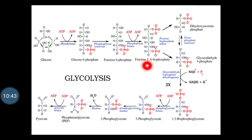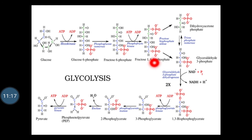The third step is the phosphorylation of fructose 6-phosphate. Fructose 6-phosphate is converted to fructose 1,6-bisphosphate. This is the second priming step of glycolysis, where fructose 6-phosphate is converted into fructose 1,6-bisphosphate in the presence of the enzyme phosphofructokinase. Like in step 1, the phosphate is transferred from ATP while some energy is lost as heat. Energy molecules are utilized in this process.